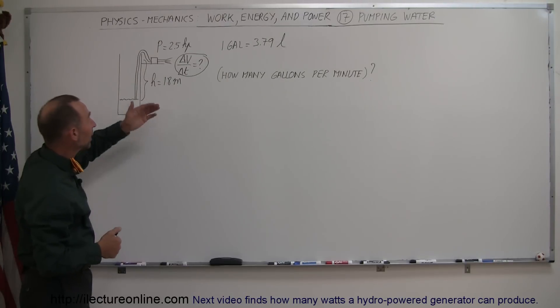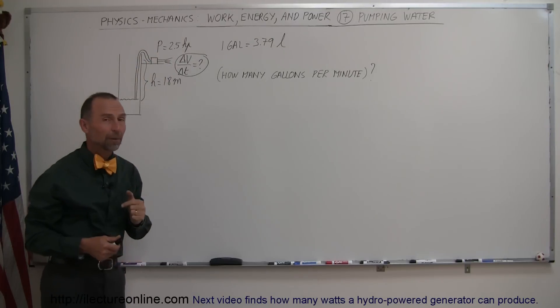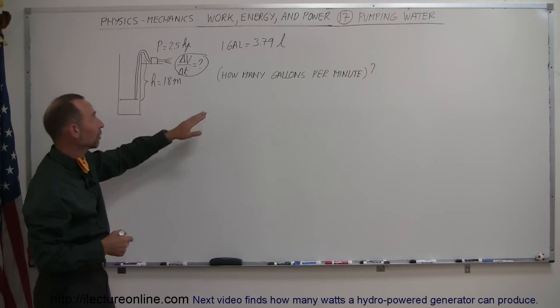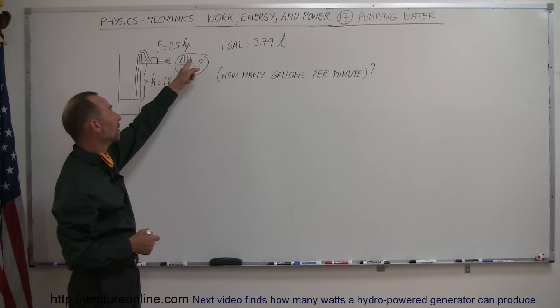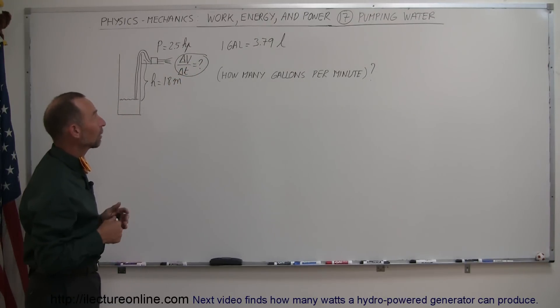In this particular example, let's say that the pump has 2.5 horsepower. How many gallons per minute could the pump pump out of the well? That's ultimately the question: the amount of volume per unit time is equal to what? That's what we're looking for.